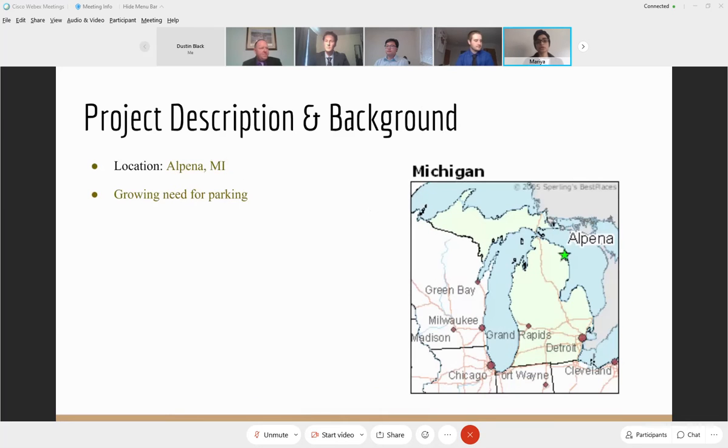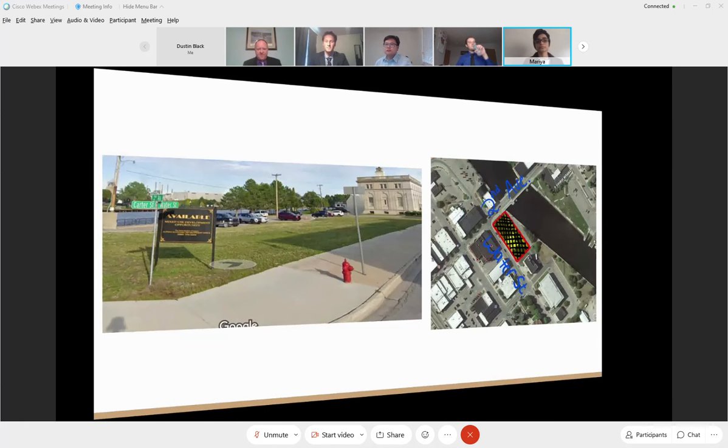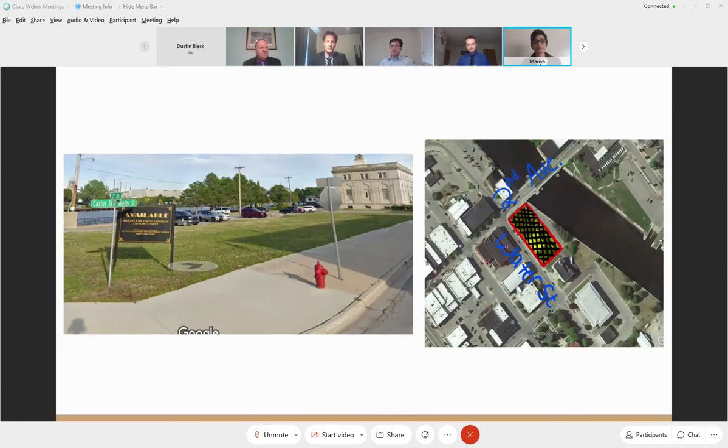First of all, the parking garage is located in Alpena, Michigan and in this area the businesses are growing and with that growth comes more clients and workers. Therefore there is growing need for parking. From these pictures you can see the exact location for the parking garage which is located at the corner of Water Street and 2nd Avenue.